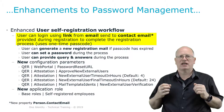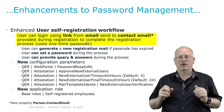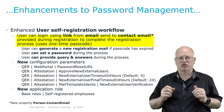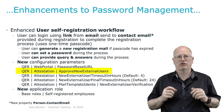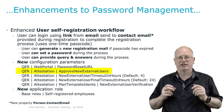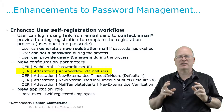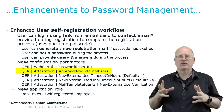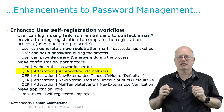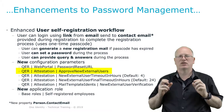Depending on configuration, the system will automatically figure out that there is an external user trying to request access to the identity manager. In this specific case, depending on the configuration parameter QER | Attestation | ApproveNewExternalUsers, this specific request has to be approved by members of a new specific application role. If this configuration parameter is not set, then the request is auto-approved, but typically members of the role will attest this specific user.